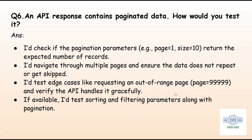The next question is: how to test APIs with pagination? Many APIs return data in pages instead of all at once, so we need to test pagination properly. First, check if page numbers like page=1, page=2 return the correct results. Second, verify the total number of items matches what is expected. Third, test what happens if you request a page that doesn't exist. Fourth, combine pagination with sorting and filtering to see if they work together.